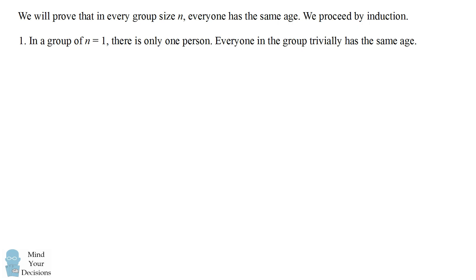Step 1, in a group of size n equals 1, there is only one person. Everyone in this group trivially has the same age. Therefore, we have checked the base case of n equals 1.